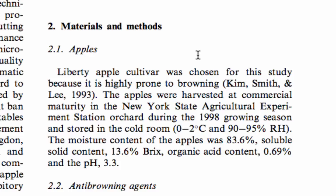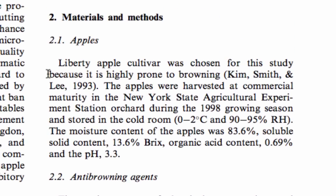As much as possible, it's better to avoid saying 'we.' Sometimes you do use it — you don't have to avoid it 100%. But when you're first starting to write a research paper, students have a tendency to say 'we did this, we did this, we did this.' If you look at this paper, there's no 'we' in it, in fact. Next sentence: 'The apples were harvested.' 'The moisture content of the apples was...' Also, reasons are explained here: 'Liberty Apple cultivar was chosen for this study because it is highly prone to browning.'